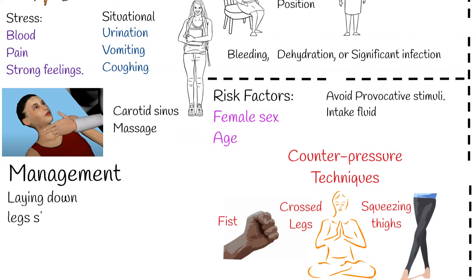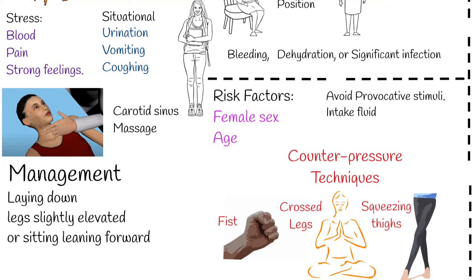Recommended acute treatment of vasovagal and orthostatic syncope involves returning blood to the brain by positioning the person on the ground with legs slightly elevated, or sitting leaning forward with the head between the knees for at least 10–15 minutes, preferably in a cool and quiet place.